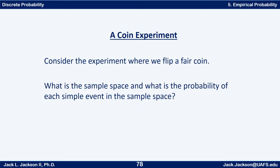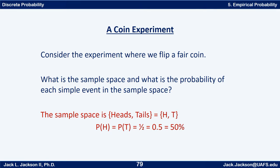Hopefully you've got your coin in front of you, or maybe a simulator. What's the sample space and what's the probability of each simple event? The sample space is heads or tails, abbreviated H and T, and the probability of heads is the same as the probability of tails, which is one-half, or 0.5, or 50 percent.